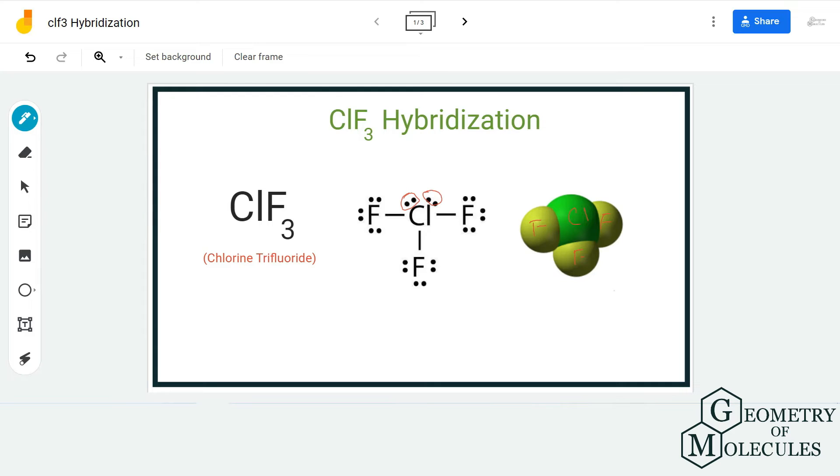hybridization here, we are going to use the steric number because that is the easiest way to find out the hybridization of any given molecule. So for finding our steric number, you basically need to know the total number